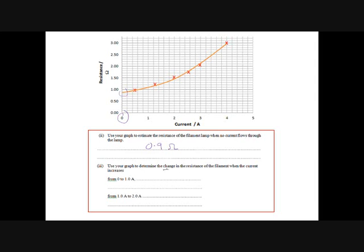Use your graph to determine the change in resistance of the filament lamp when the current increases from 0 to 1 amp. So we've already got 0.9. If we read it off at 1 amp, then we get a resistance of about 1.1 ohms, so we've gone 1.1 minus 0.9 is 0.2 ohms. Try and show some indication of how you've got this number, because if your best fit curve isn't the same as theirs and you just write the answer down and they disagree with your answer, you might find you're not getting the mark for it.